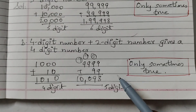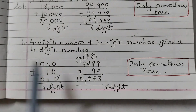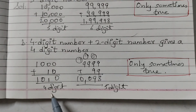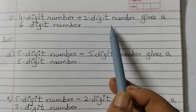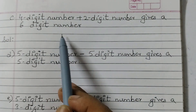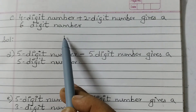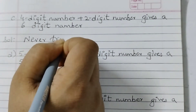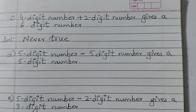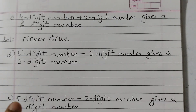Based on the previous question, when we add a four-digit number plus a two-digit number, we see we can only get a four-digit or five-digit number. The next statement says: four digit number plus two digit number gives a six digit number. However, we just saw we only get four or five digit numbers, so this is going to be never true.